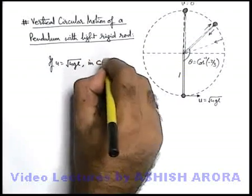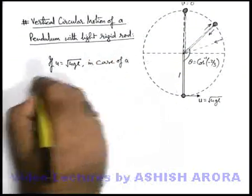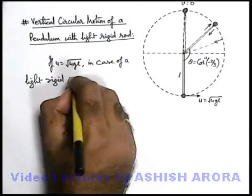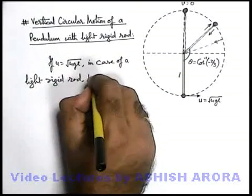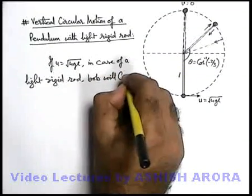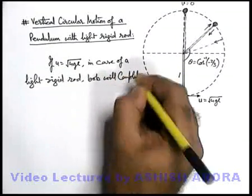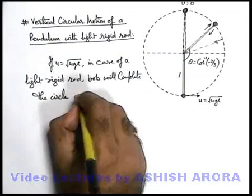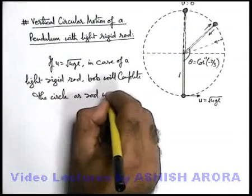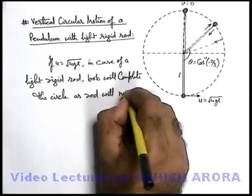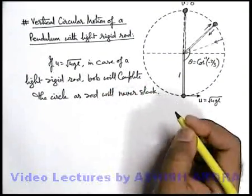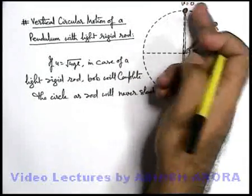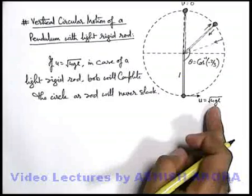in case of a light rigid rod, bob will complete the circle as rod will never slack. If it is able to reach the topmost position, here it'll further fall if it is having a speed slightly more than root 4gl.